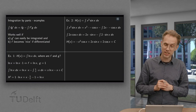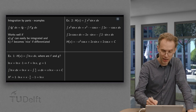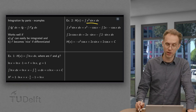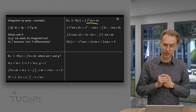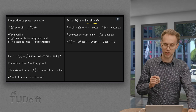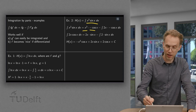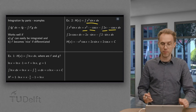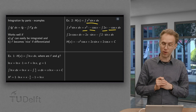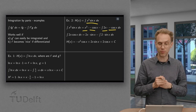Let us look at the second example, where we want to compute the antiderivative of x² times sin(x). We take f equals x² and g prime equals sin(x). We get f times g minus the integral of f prime: the derivative of x² is 2x, and g is minus cos(x). But we are left with the integral of 2x·cos(x), which is still not a standard one.